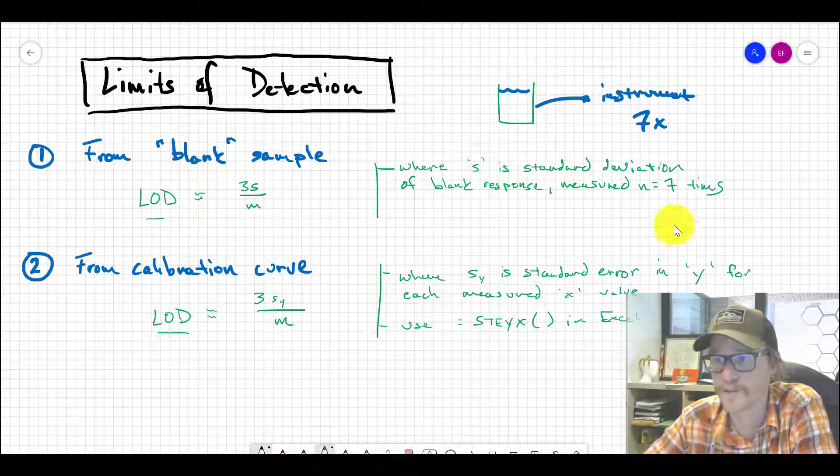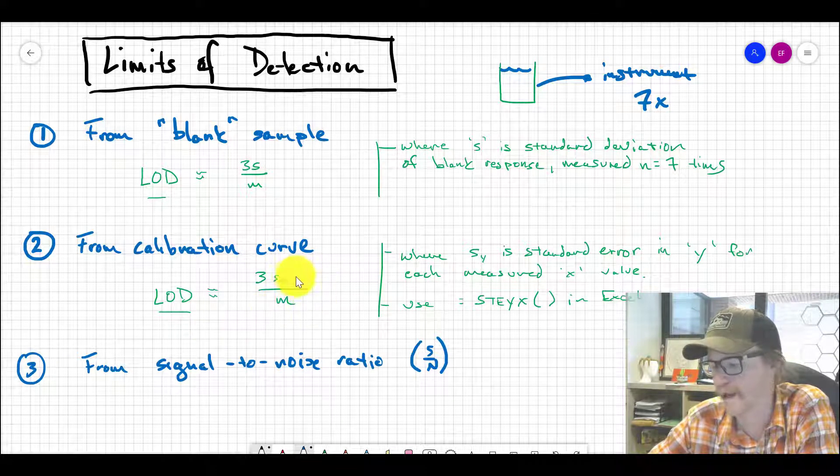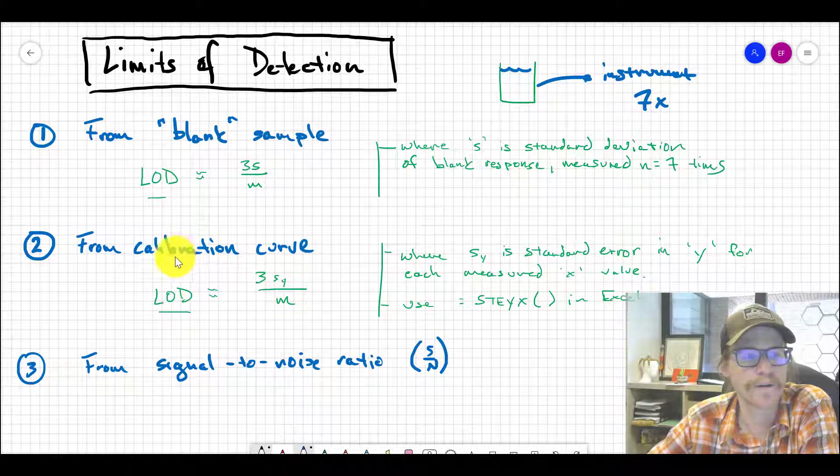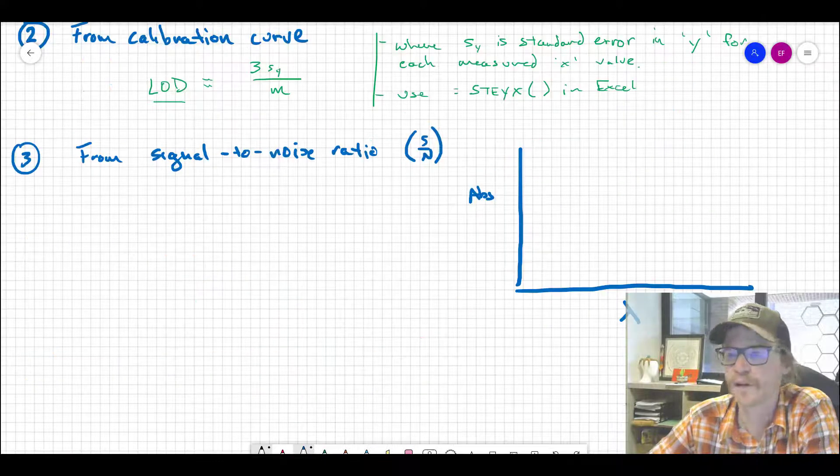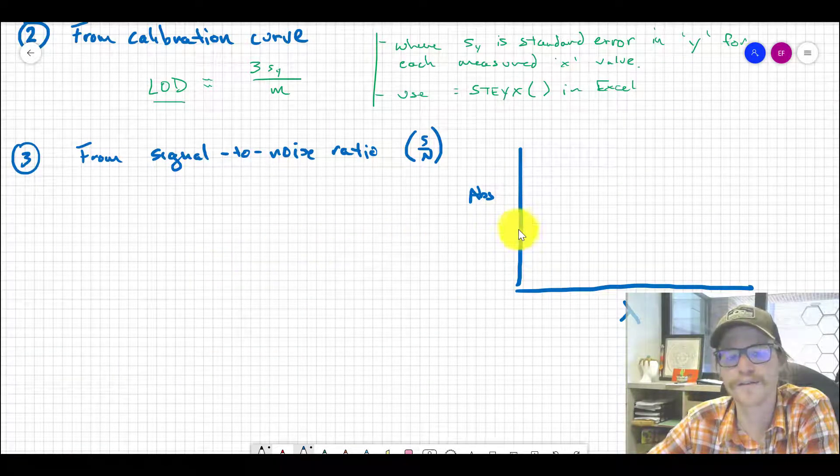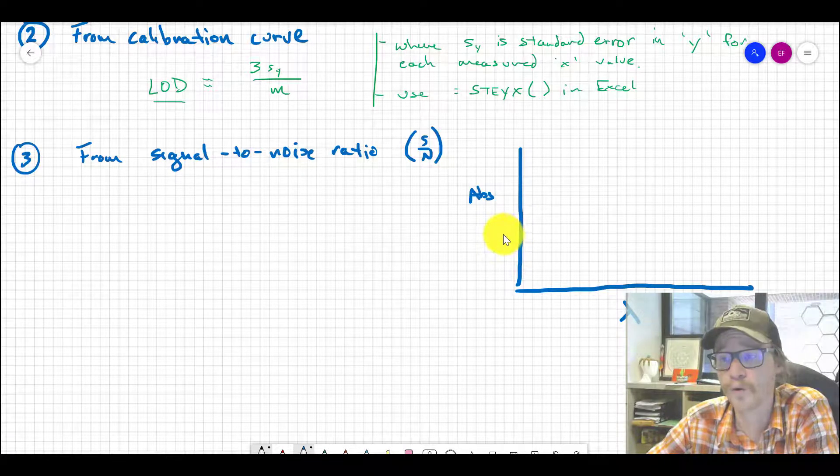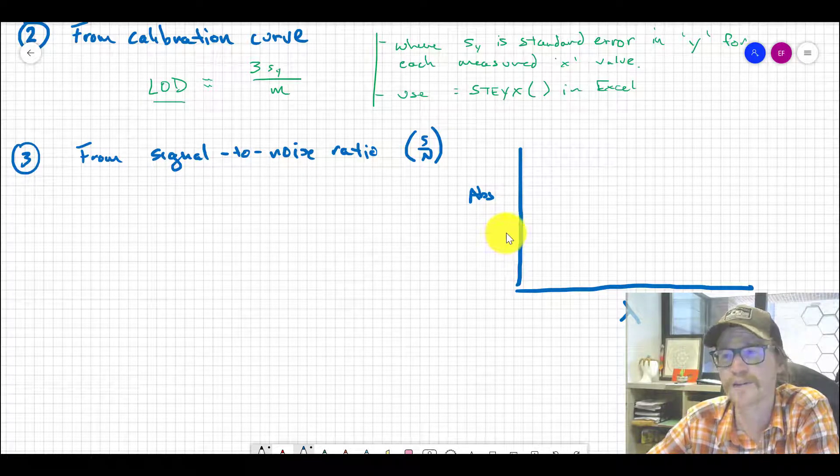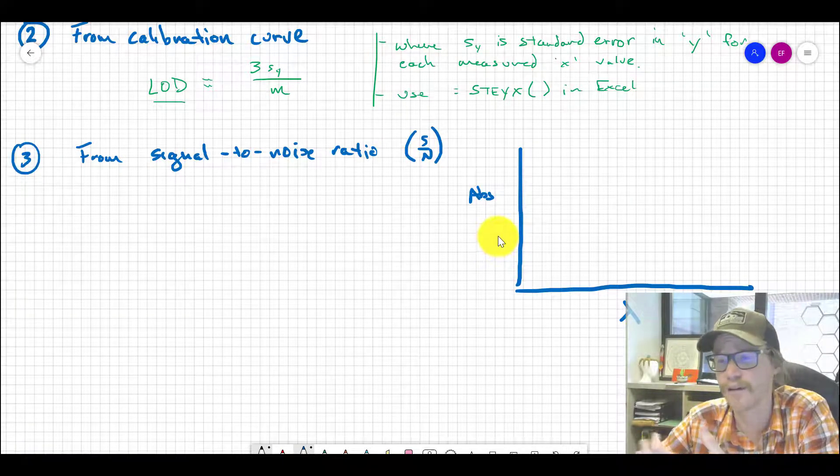The third method is what I'd consider a quick and dirty method. You can estimate the limit of detection from the signal-to-noise ratio. The signal-to-noise ratio is the relationship between the response from the analyte versus the response from the instrument background itself—usually electronic or thermal noise.